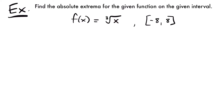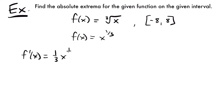Next we have f of x equals the cube root of x, and we want to find its absolute extrema on the interval from negative 8 to 8. We're going to first rewrite our function as f of x equals x to the one-third power, which makes it easier to use the power rule. So f prime of x equals one-third times x to the one-third minus one power, which equals one-third times x to the negative two-thirds power.